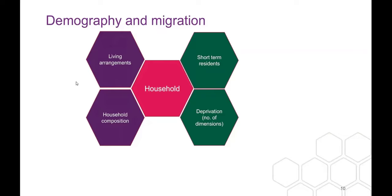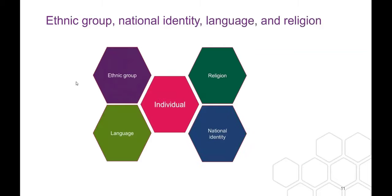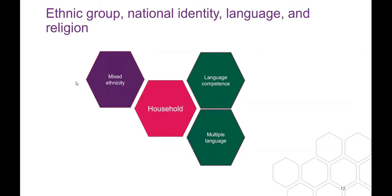Within the census, deprivation is enumerated in terms of employment, health, housing and education. The definitions should be within the documentation. In terms of ethnic group, at individual level we get ethnic group, religion, national identity and language. For households we get households where ethnicity is mixed, an assessment of English language competence for members of the household, and whether a household is multilingual.